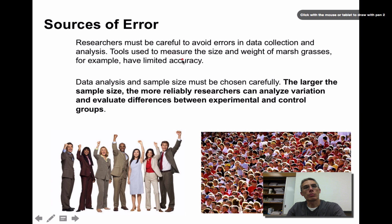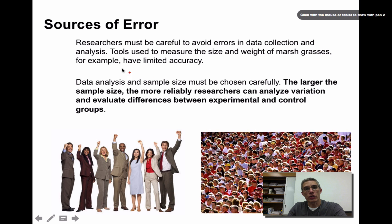In any experiment, we need to think about sources of error that might have occurred. We do our best to avoid errors in data collection, but mistakes do happen. Data analysis and sample size must be chosen carefully — how you collect the data and how large your sample is are big indicators of whether there was any type of error. The larger the sample size, the more reliable your data is going to be for arriving at a valid conclusion.